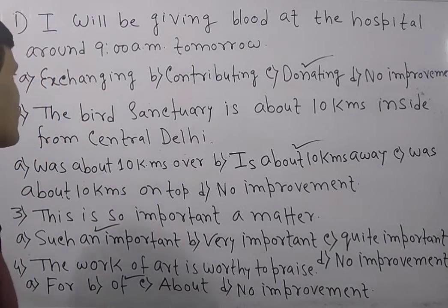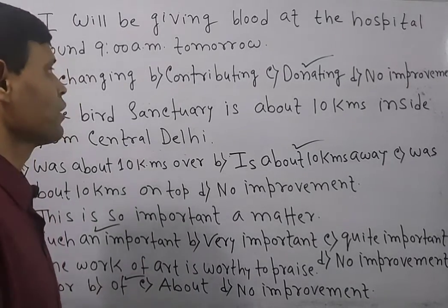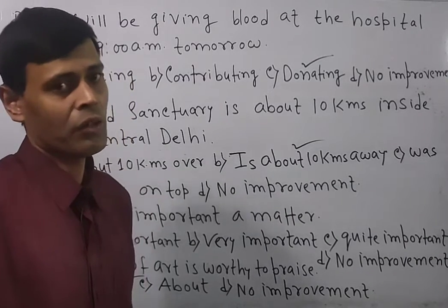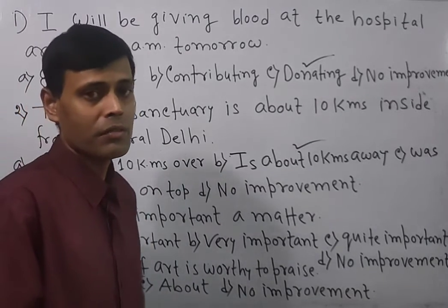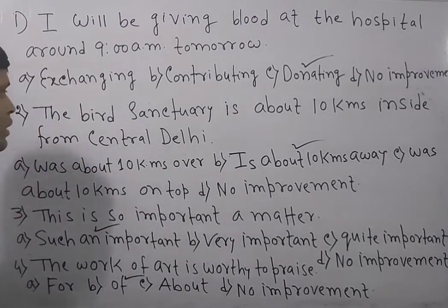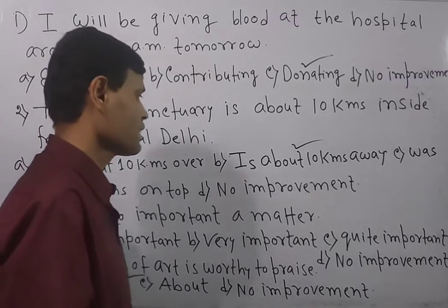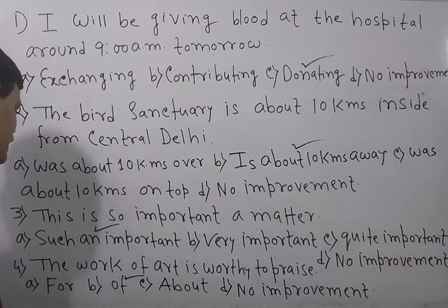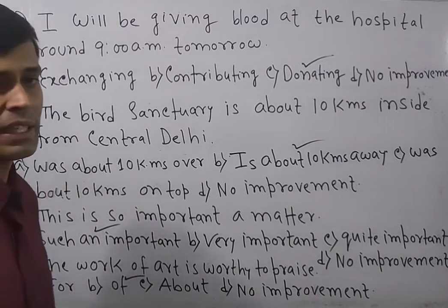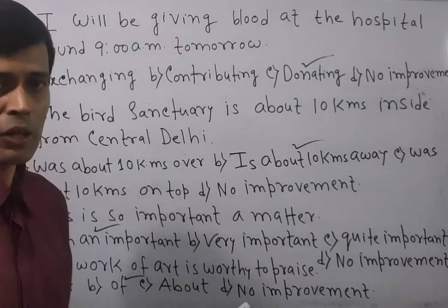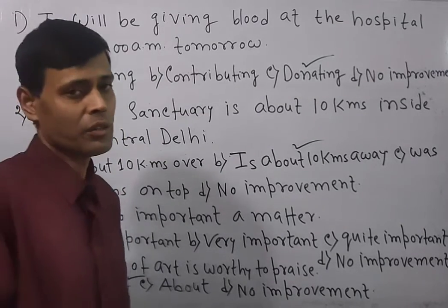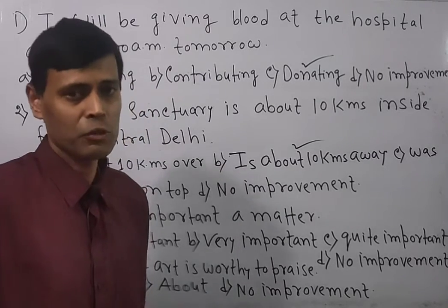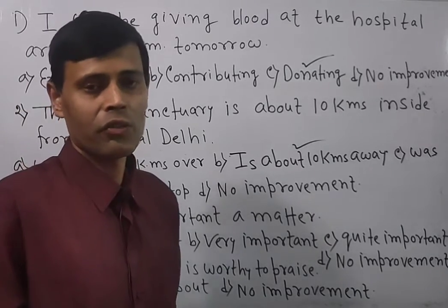To review the overall class: the first answer is option C, donating — there is a difference between donating and contributing, as donation must be voluntary. The second answer is option B, 'is about 10 km away.' The third answer is option A, 'such an important matter.' The fourth answer is option B, 'of.' If you have any doubts, drop a comment and I will help you. If the video is helpful, please share, subscribe, and hit the notification bell for more videos.